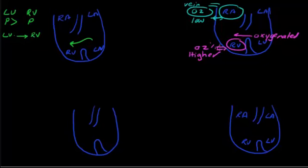Once you see this discrepancy between right atrium and right ventricle, that means there is another amount of oxygen coming from another part — which is the left ventricle. The right ventricle received oxygen from the left ventricle, so that's why the oxygen saturation in the right ventricle will be higher than the right atrium saturation. This is the second issue.